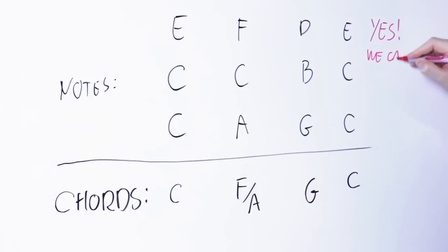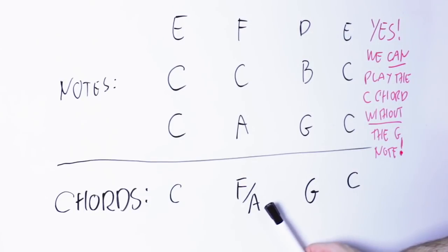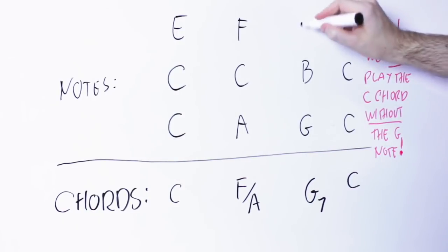If we do that we have this chord progression: C, F with a bass of A, G and back to C. And of course we can also use a G seventh chord, so adding an F note to the G triad.